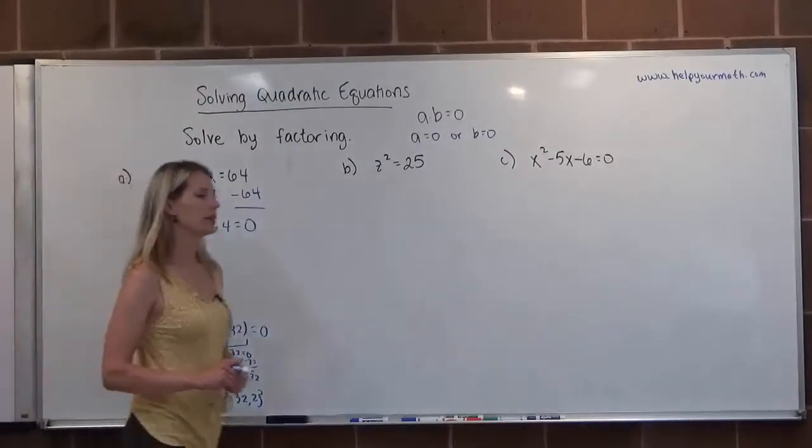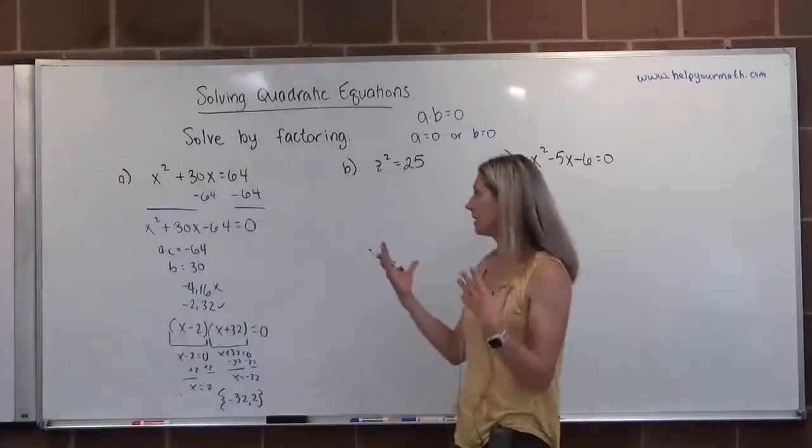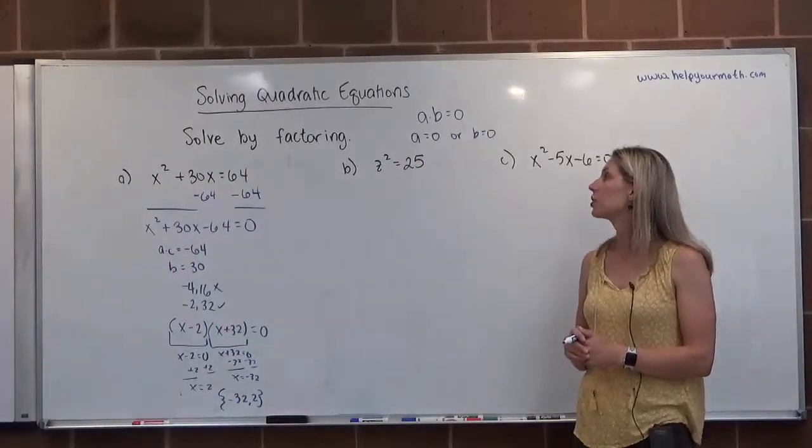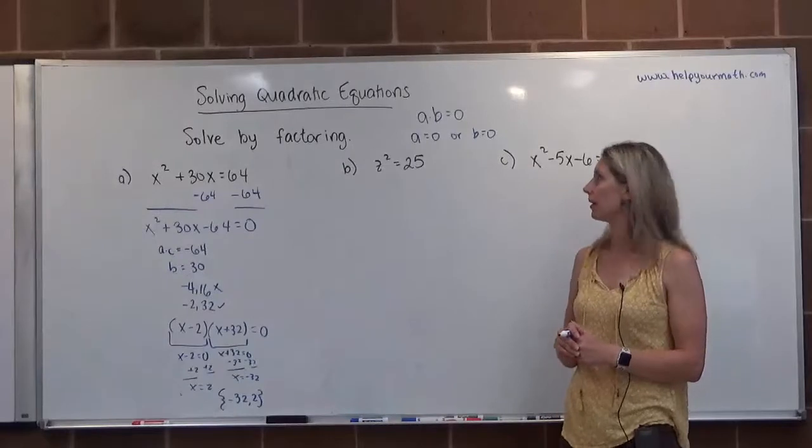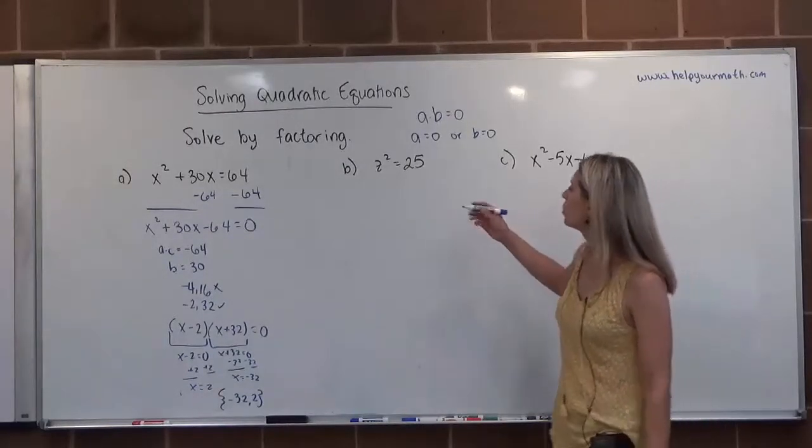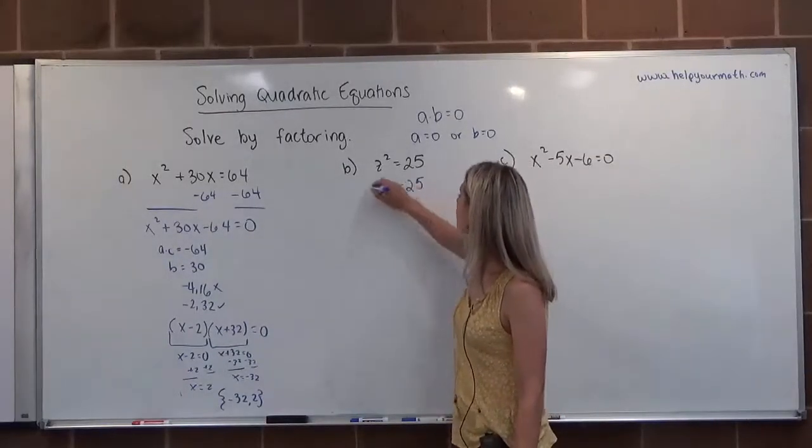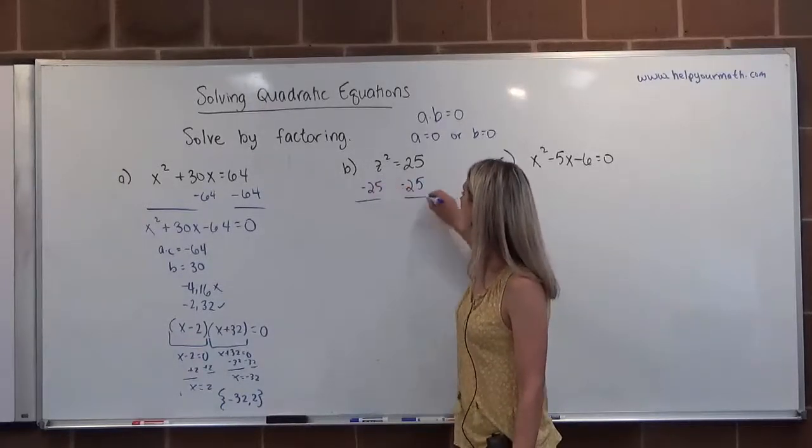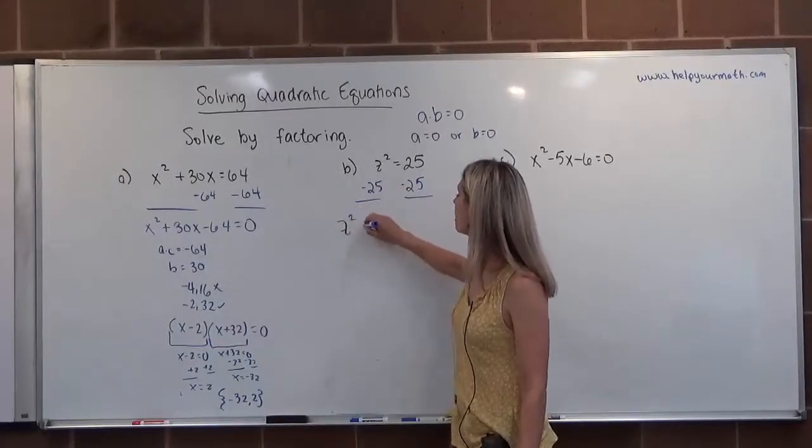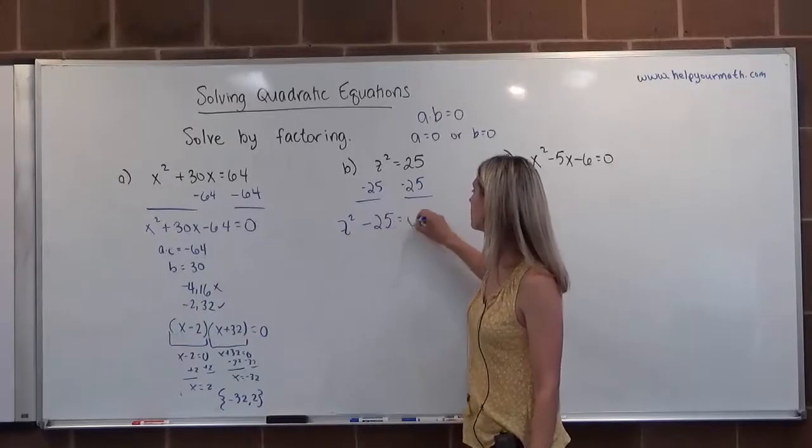Letter B, we have z squared equals 25. It does specify that it wants us to solve by factoring, so that's what we're going to do here. We are going to set this equal to zero, so I'm going to subtract 25 from both sides. That gives me z squared minus 25 is equal to zero.